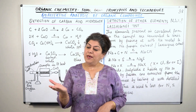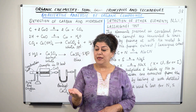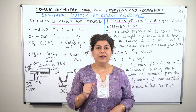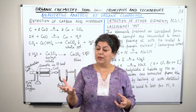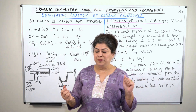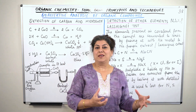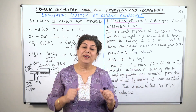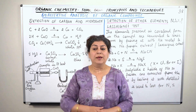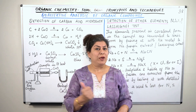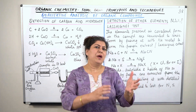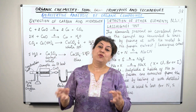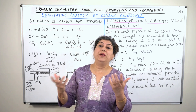Before coming to today's topic, let's think about what happens in the lab. If you are given a salt and asked to identify it, you know the salt is an ionic compound with a cation and anion. You follow a sequence of tests to identify the cation and anion, and even for a mixture of salts, you can identify multiple cations and anions this way.